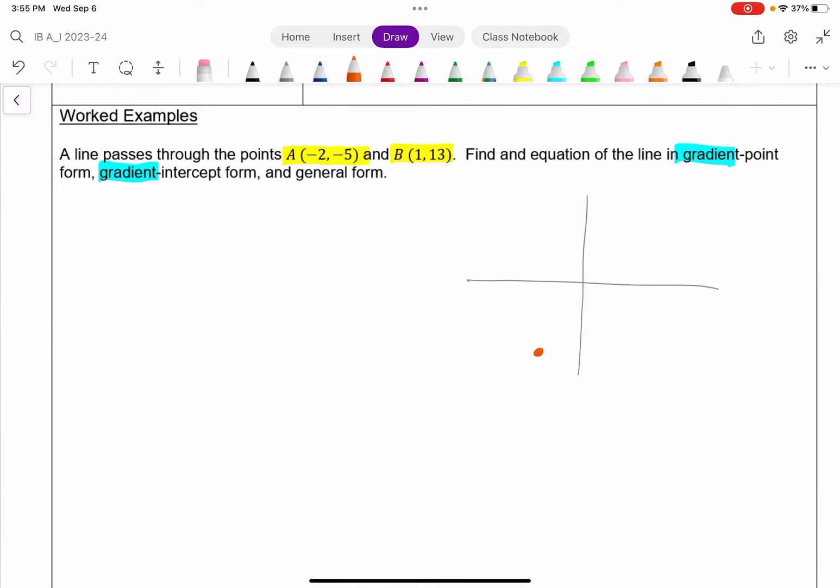Point A, negative 2, negative 5, let's say around here. And B, 1, 13, let's put up here. And the idea is we are imagining a line that goes through these two points. And so I'll draw that line. All right, and so this line can be expressed in many different equations.